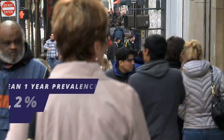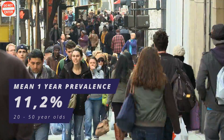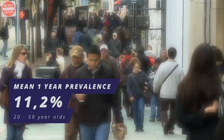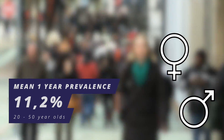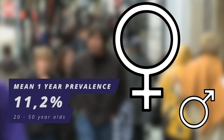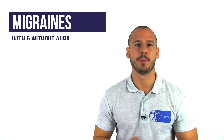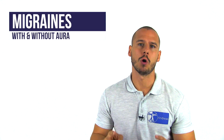Now let's take a closer look at migraines, which are primary-type headaches. Migraines have a mean one-year prevalence of 11.2% around the world, with women being more often affected than men in an age range between 20 to 50 years old. Migraines exist in two distinct forms — either with or without the presence of a phenomenon called Aura, but we will get to that later.